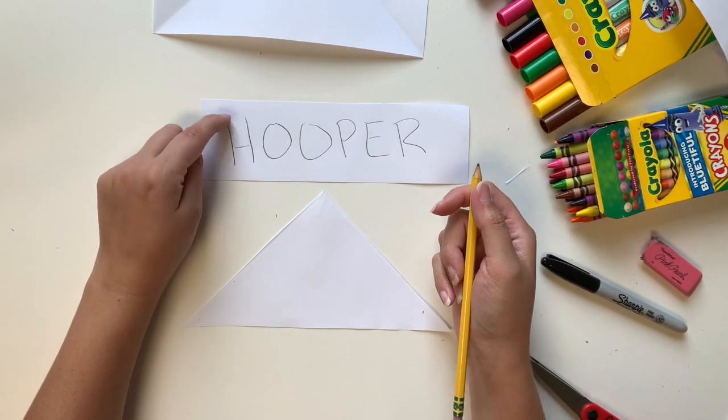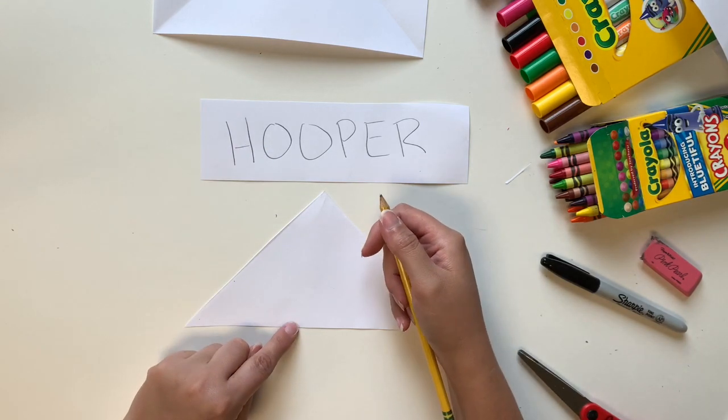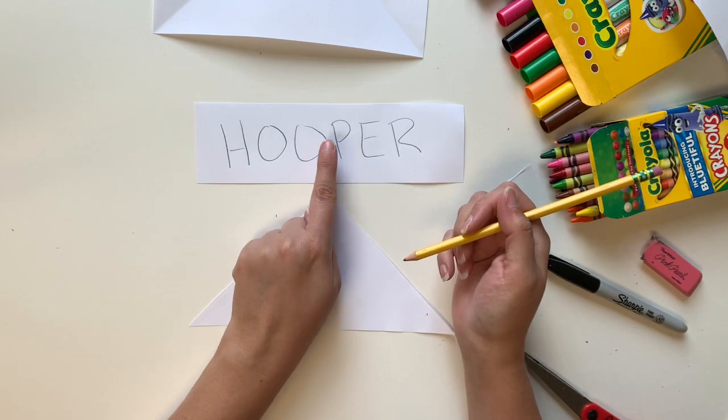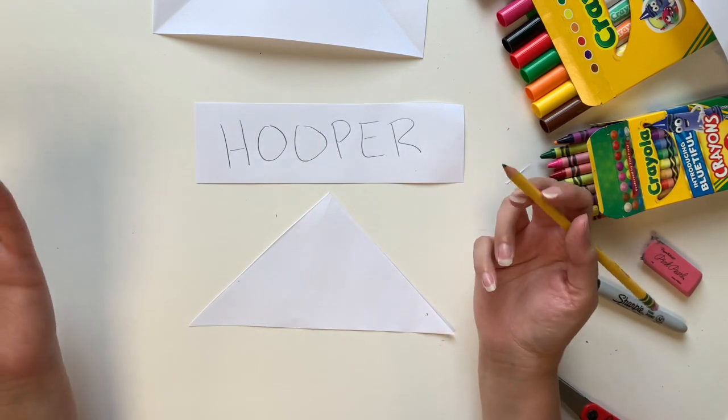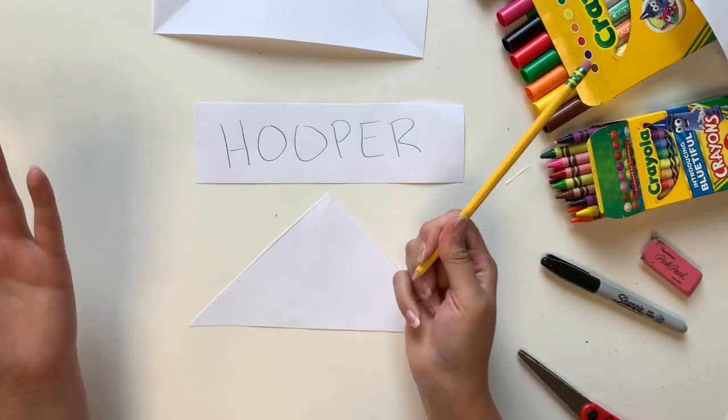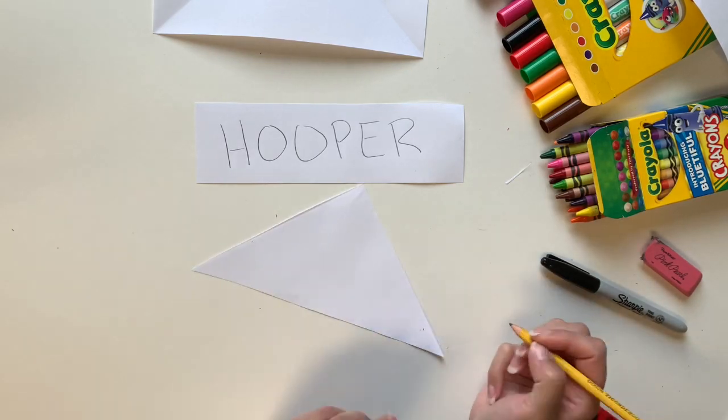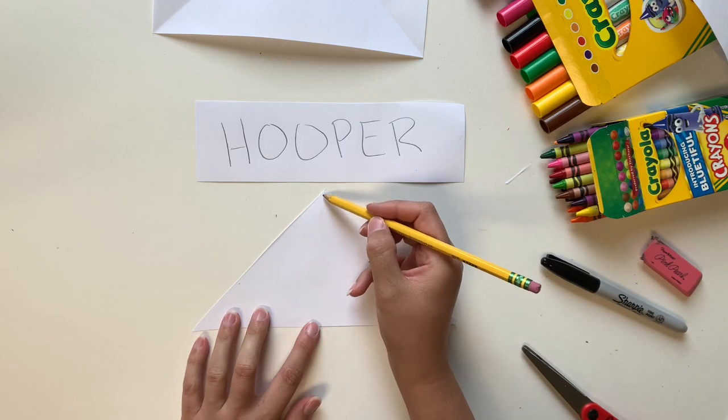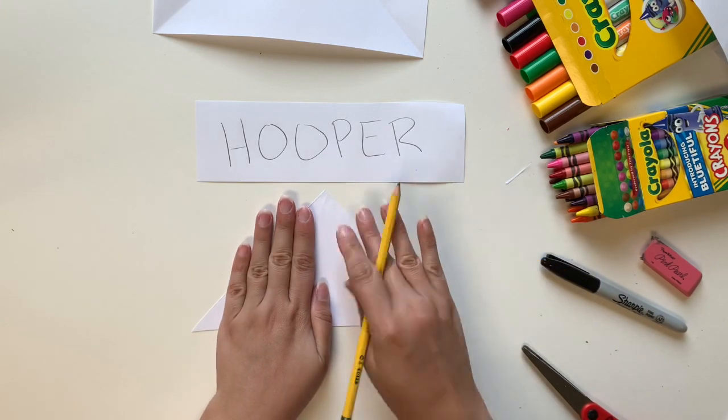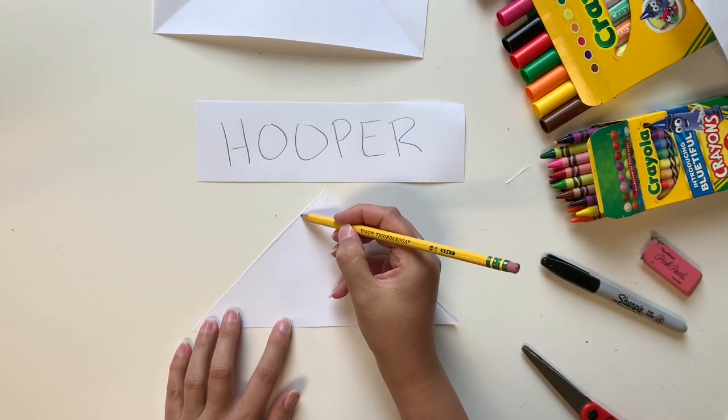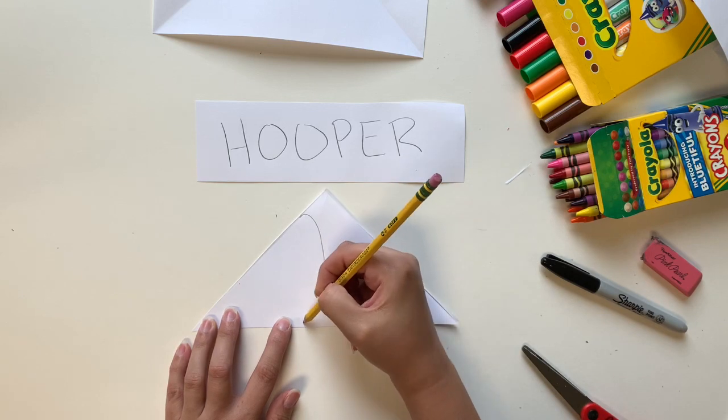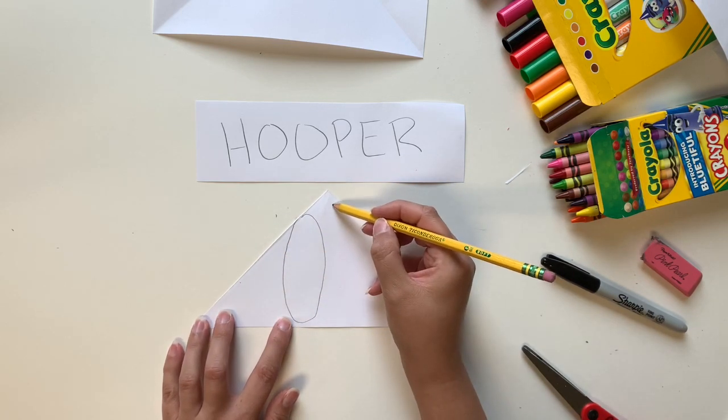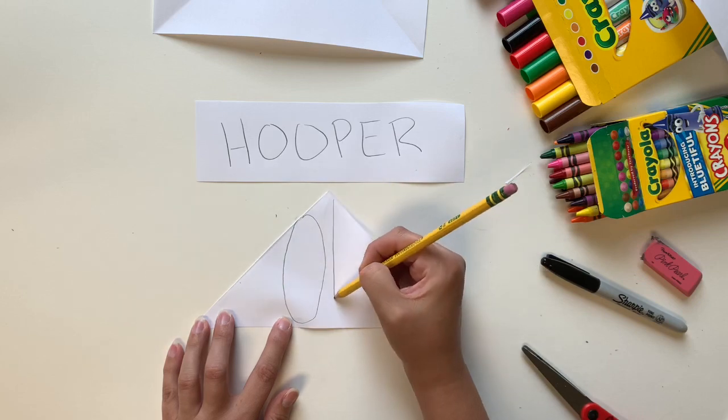When you're drawing, you want the top and bottom of each letter to touch the top and bottom of your triangle. I'm going to start in the middle of my name with the O and the P for the center. I'm going to draw touching the top, coming down to the bottom, a big skinny O. Then I'm going to do the P on this side, coming all the way up to the top, down to the bottom.